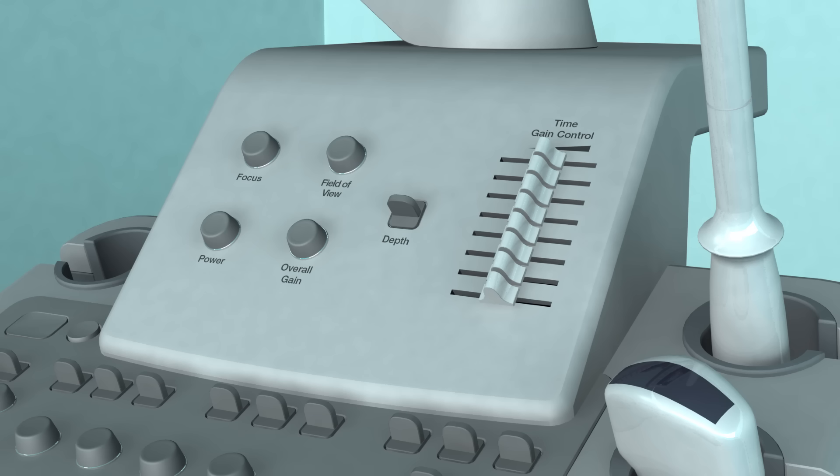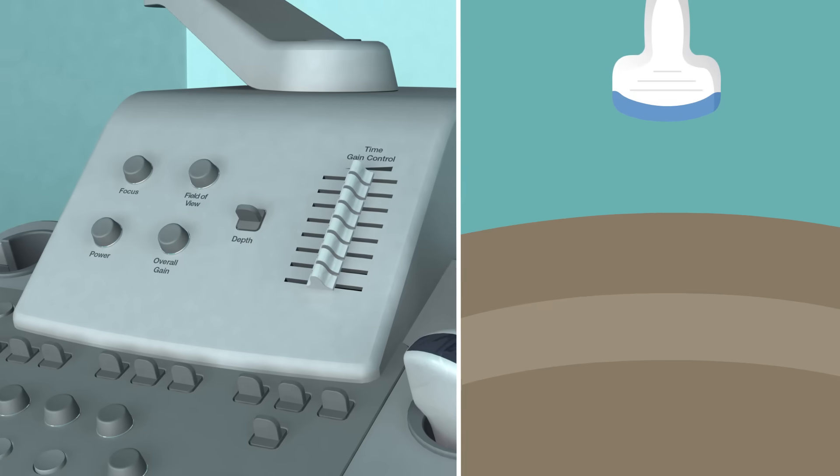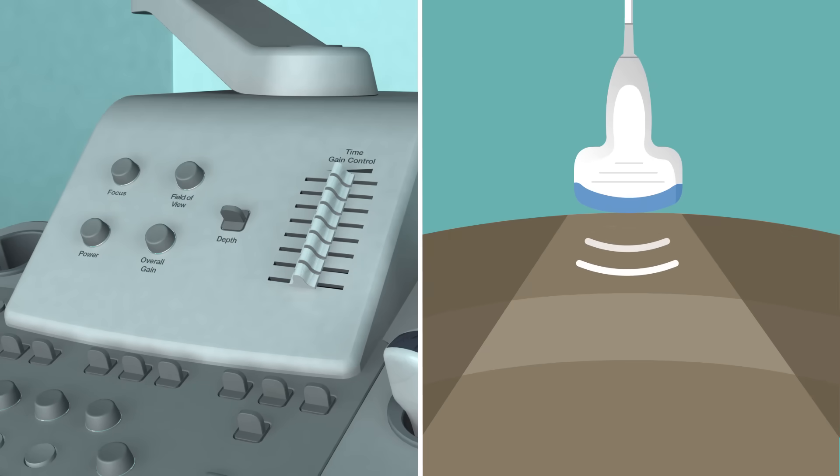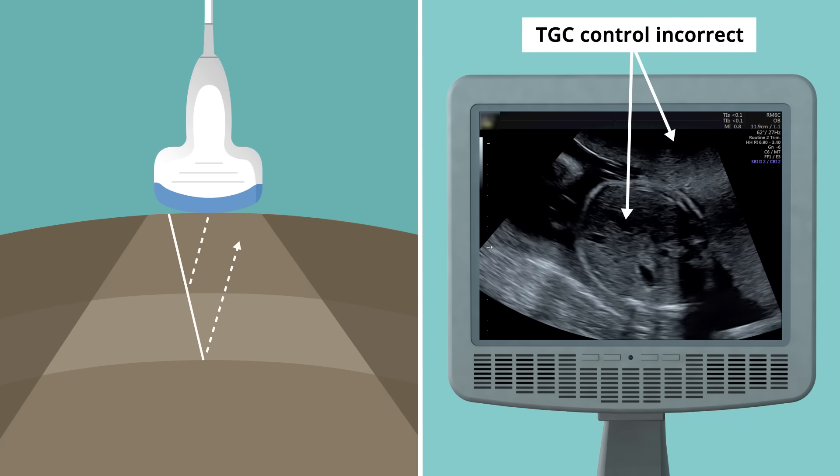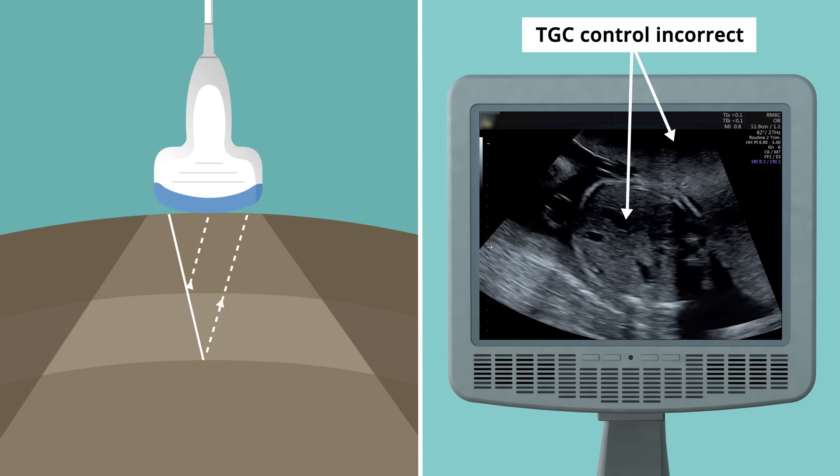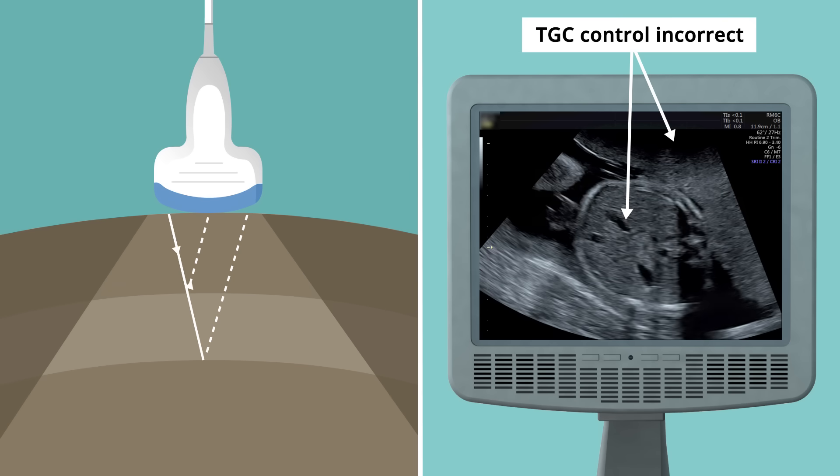Ultrasound signals decrease in strength the deeper they penetrate into tissue, meaning that the corresponding echo received by the scanner is also weaker. Uncorrected, this would result in the deeper parts of the image appearing darker than the superficial layers. To correct for this, the time gain control allows the sonographer to selectively increase or decrease the strength of signal received by applying different amounts of gain at different depths.